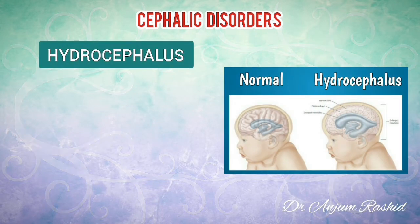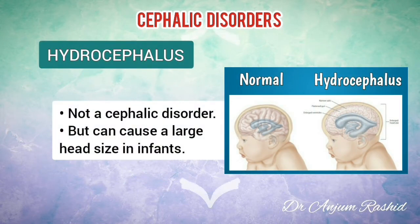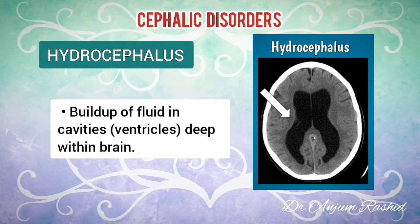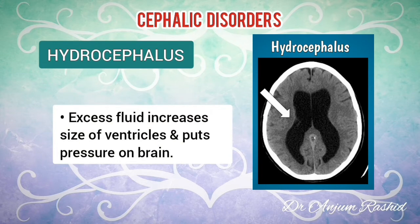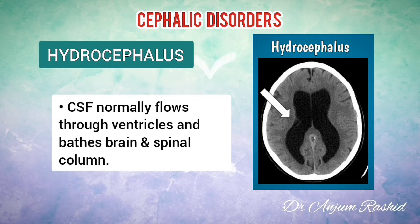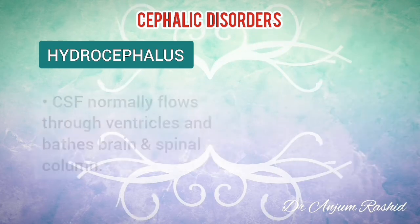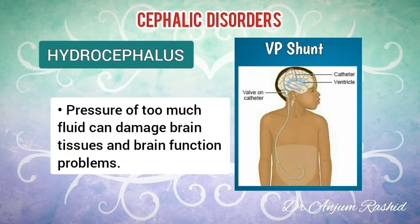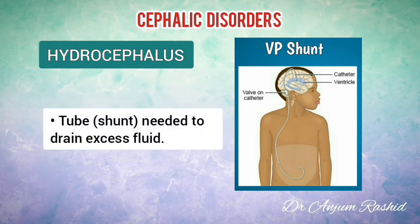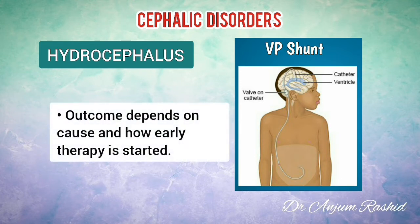Now I will discuss hydrocephaly. It is not really a cephalic disorder but it can cause a large head size in infants. Hydrocephaly is the build-up of fluid in the cavities or ventricles located deep within the brain. The excess fluid increases the size of the ventricles and puts pressure on the brain. Cerebrospinal fluid normally flows through the ventricles and bathes the brain and spinal column. The pressure of too much cerebrospinal fluid can damage brain tissue and cause a range of brain function problems. Children usually need a tube or shunt to drain the excess fluid, and the outcome depends on the cause and how early therapy is started.